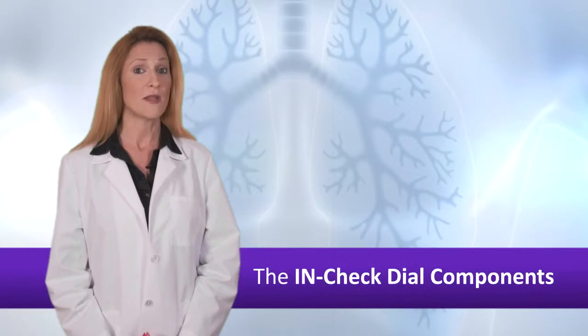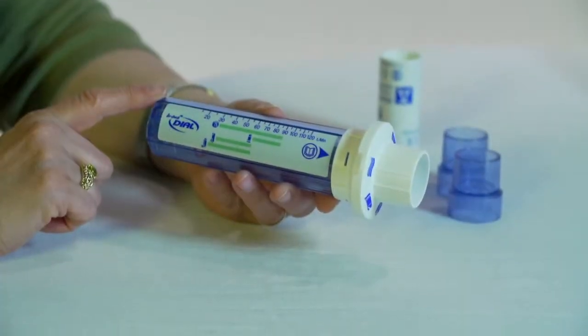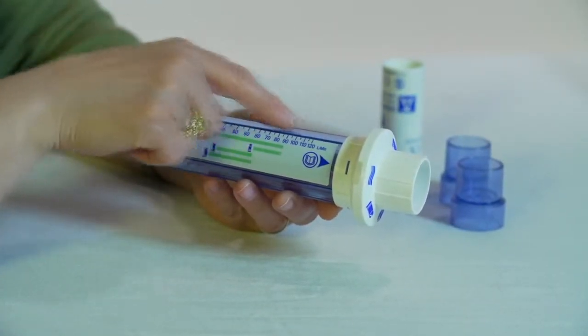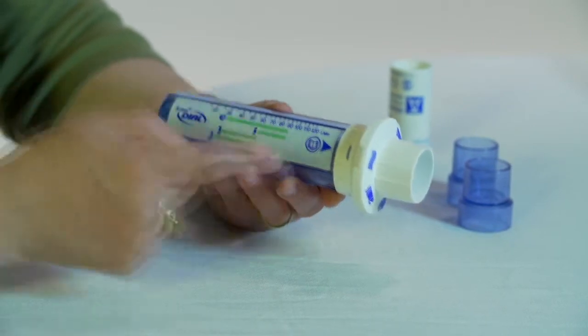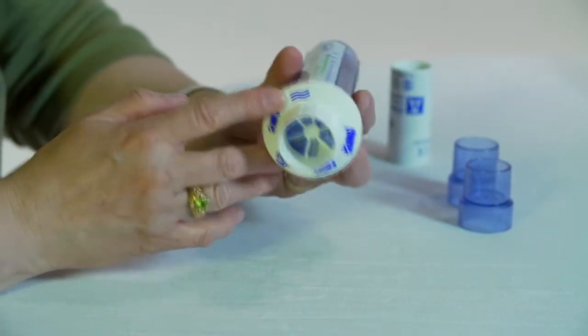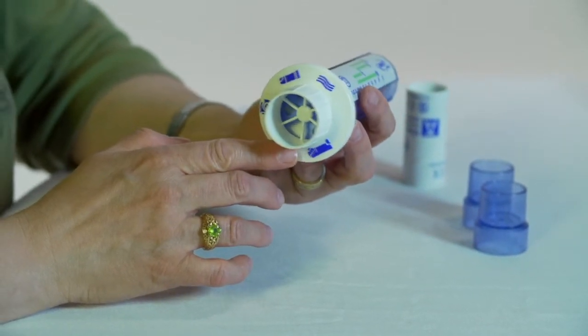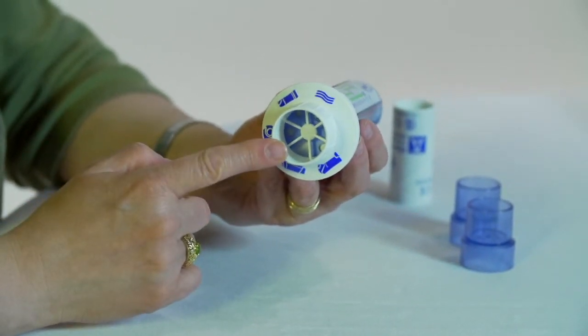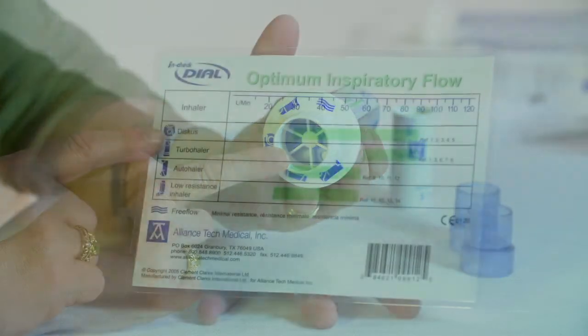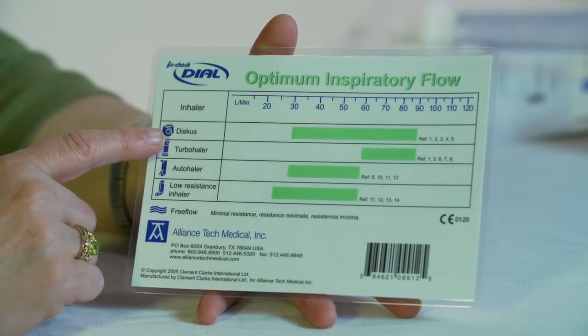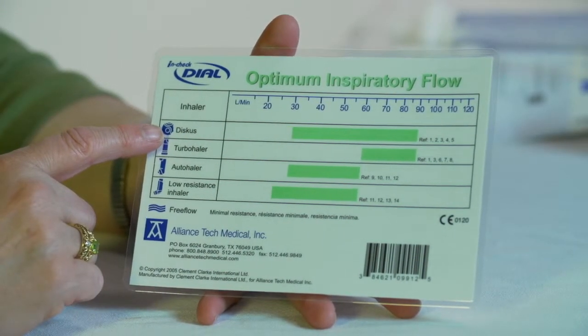The InCheck Dial has three main parts: an inspiratory flow meter, which is in the long clear tube portion, a rotating dial that sets the airflow resistance for the various devices, and a place to insert a mouthpiece. A sterilizable mouthpiece is included. One can also purchase disposable mouthpieces. The device also comes with a card showing optimal flow ranges for various devices.